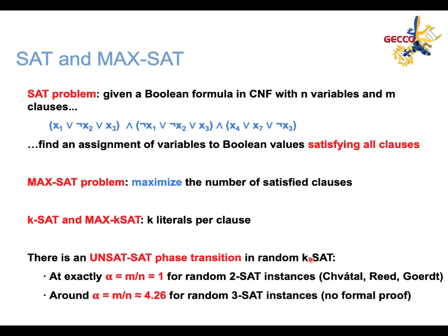In random KSAT instances, there is a phase transition from UNSAT to SAT instances, and this happens when the ratio between clauses to variables — that is alpha — is 1 in the case of 2SAT, and it is around 4.26 in the case of 3SAT. However, for the case of 2SAT instances there is a formal proof, but for larger values of K there is no formal proof.